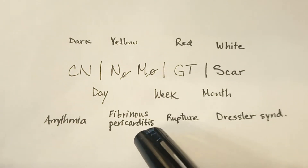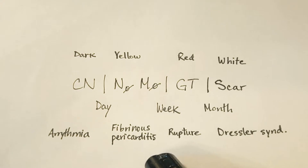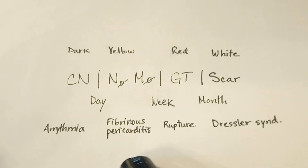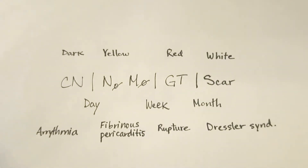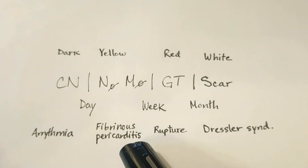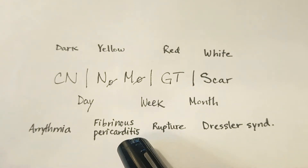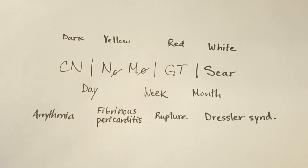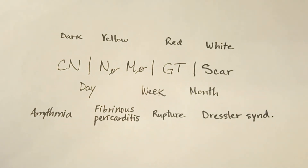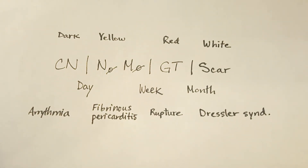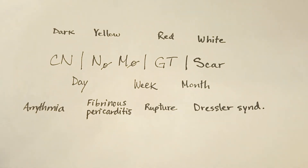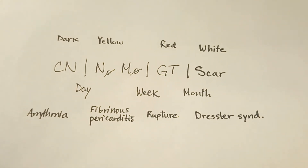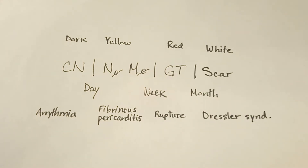Fibrinous pericarditis is going to occur within a day to a week, while your inflammatory cells are doing work. That is actually due to the neutrophils, and it can only happen if you have a transmural infarction — meaning an ST-elevation type myocardial infarction, a STEMI.